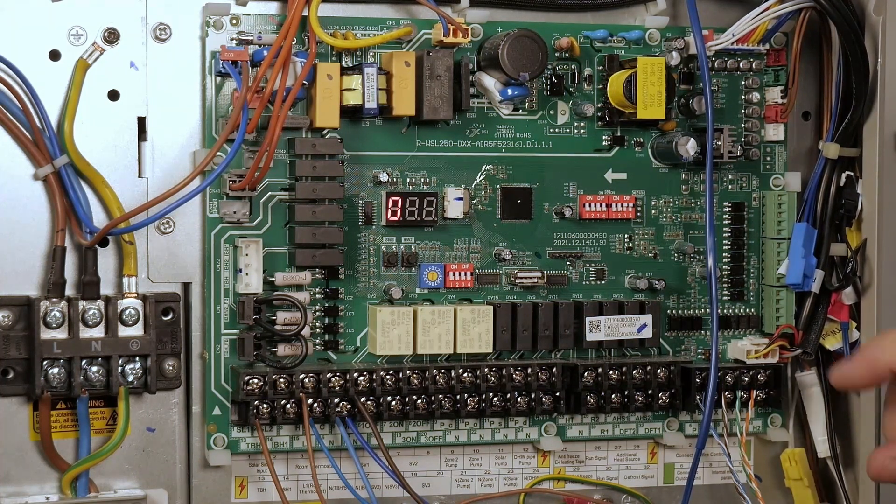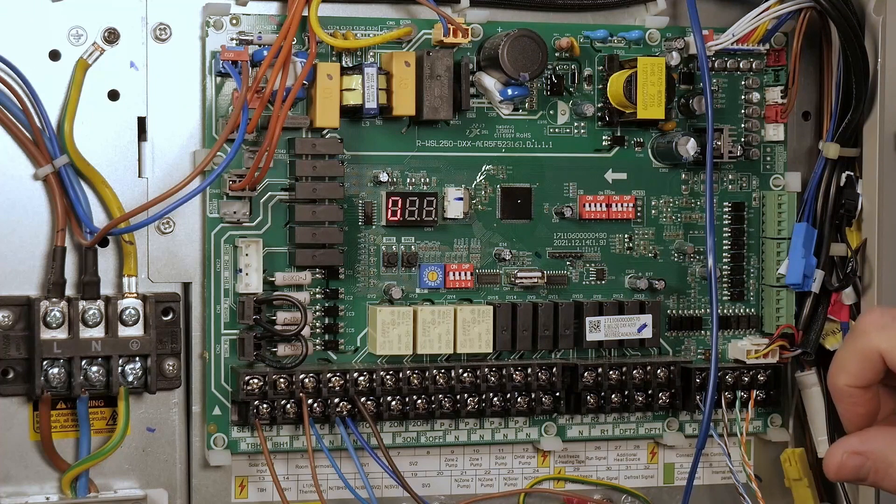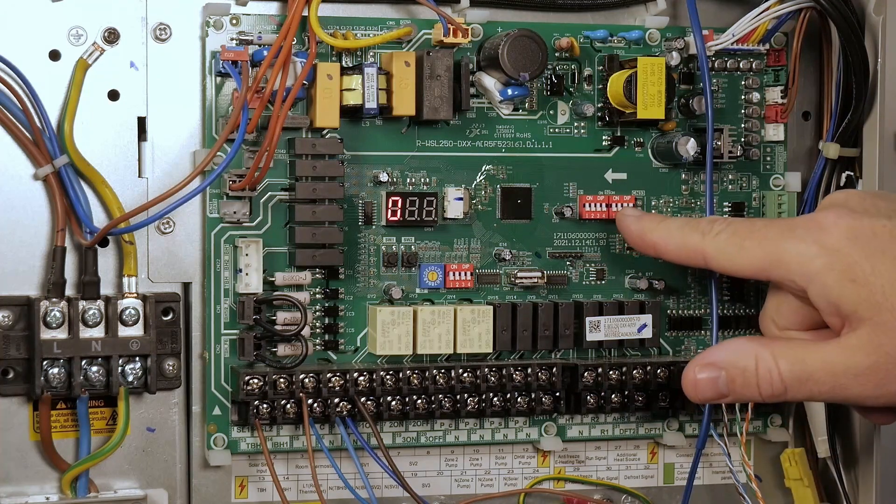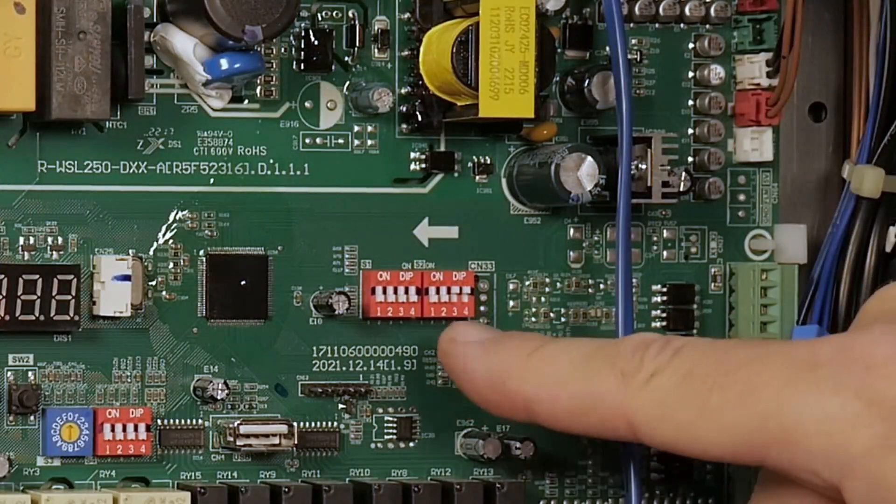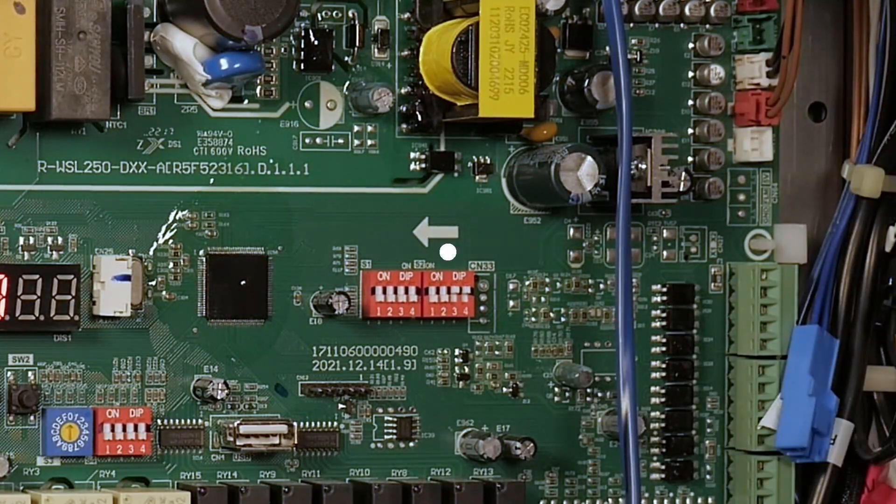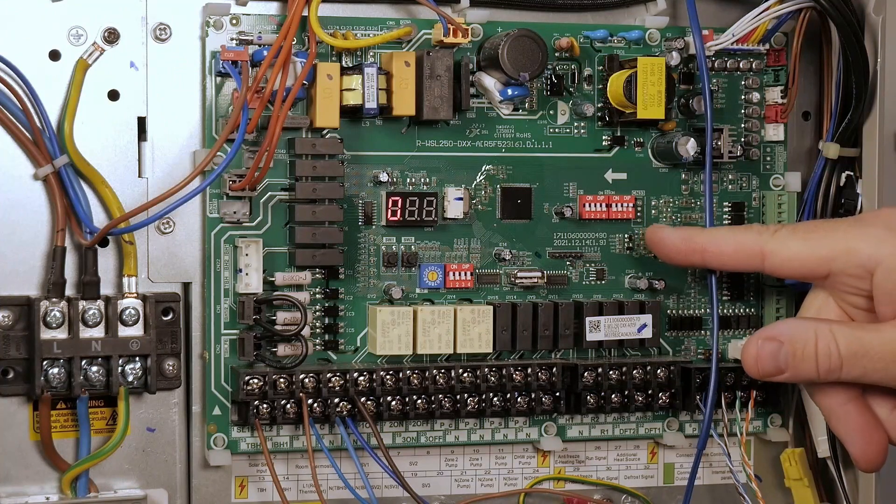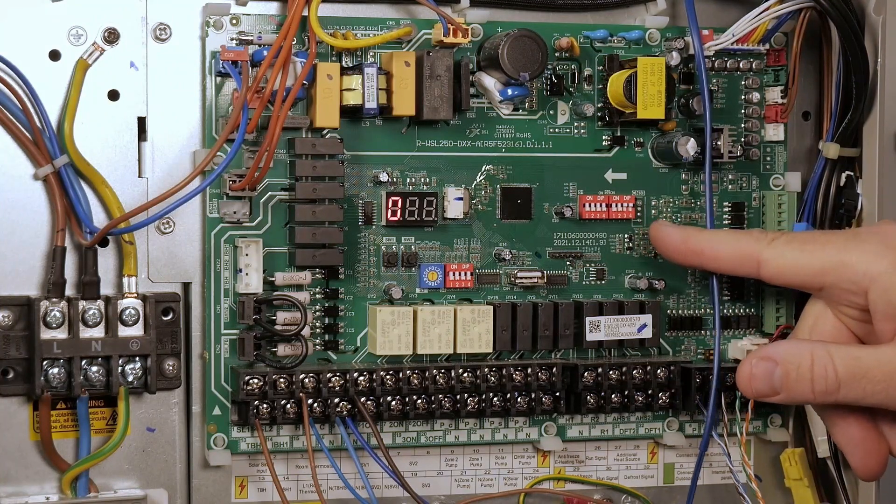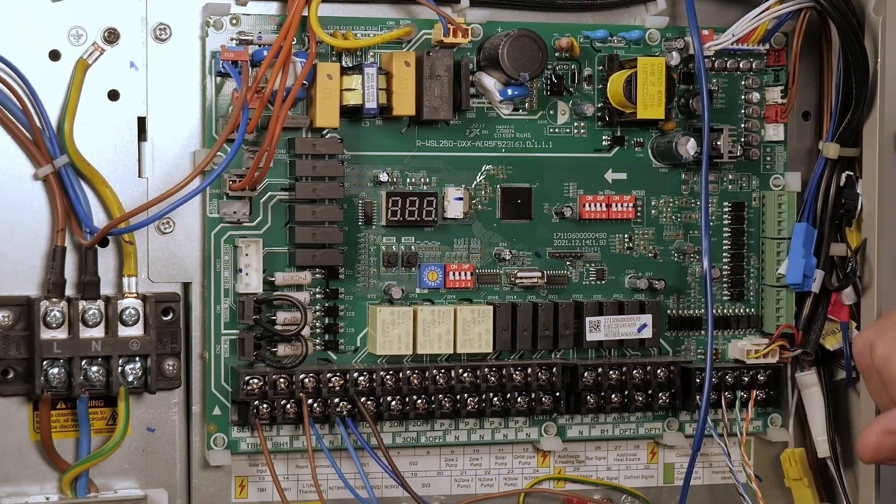If we just identify a couple of things while we're here, these dip switches here, depending on whether you go for bivalent or cascaded unit and some other functions, you may need to refer to that, but that could also be set for you on commissioning by your commissioning engineer if you're unsure about which ones to use there.